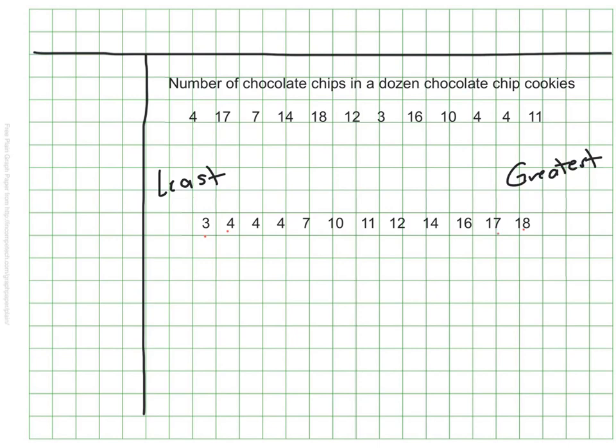I notice, since I have an even number of cookies, that there are two numbers left in the middle, my 10 and my 11. My median is halfway between 10 and 11. So my median is 10 and a half. I'm just going to put a mark there that that's the median.